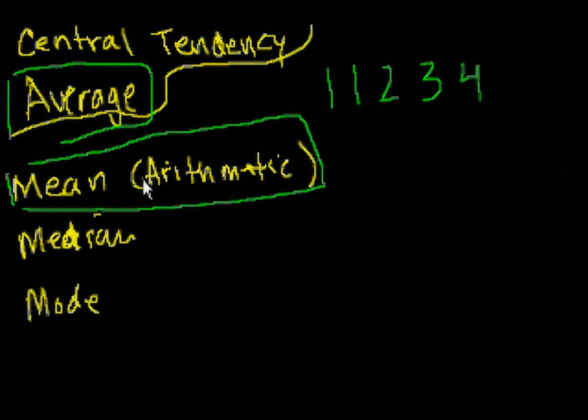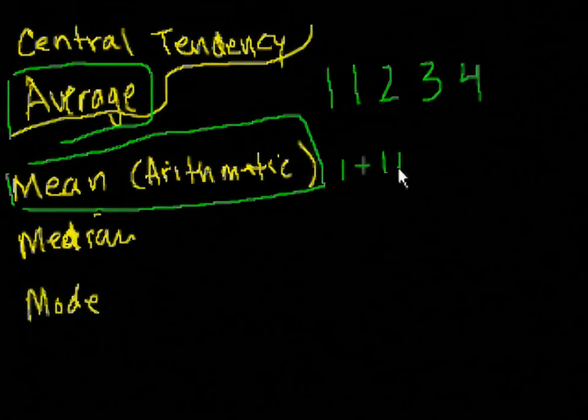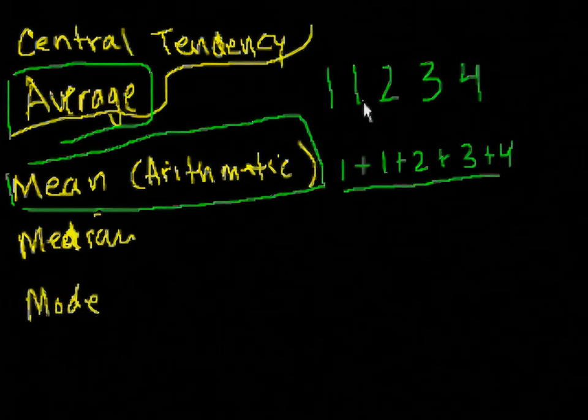So the mean, or the arithmetic mean, is probably what you're most familiar with when people talk about average. And that's essentially you add up all the numbers and you divide by the numbers that there are. So in this case, it would be 1 plus 1 plus 2 plus 3 plus 4. And you're going to divide by 1, 2, 3, 4, 5 numbers. And this is what?